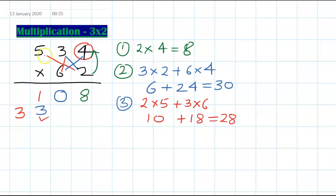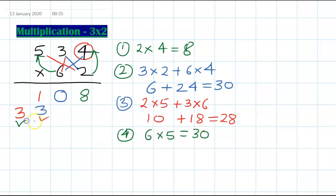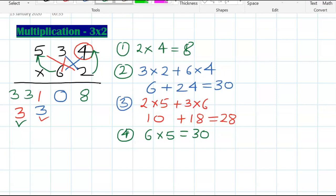Last step: 6 times 5 is 30, plus carry 3 is 33. So the final answer is 33108.